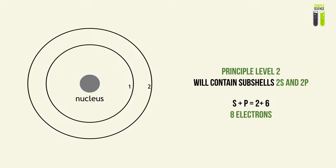Principal energy level 2 will contain subshells S and P, labelled 2S and 2P. The total number of electrons that can occupy these two subshells is 2 plus 6 — 2 from the S subshell and 6 from the P subshell — giving a total of 8 electrons.